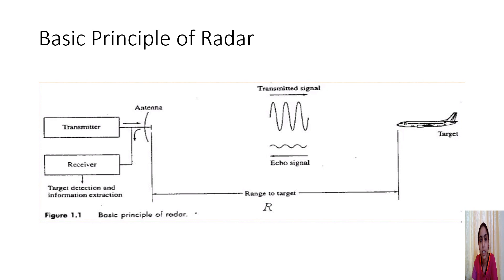This block diagram explains the basic principle of radar. There is a transmitter and receiver connected to a single antenna. This single antenna works as a duplexer for both transmission and reception. Here we have shown a particular target, and capital R represents the range to the target from the antenna. We transmit an electromagnetic wave from the antenna which is radiated into space.